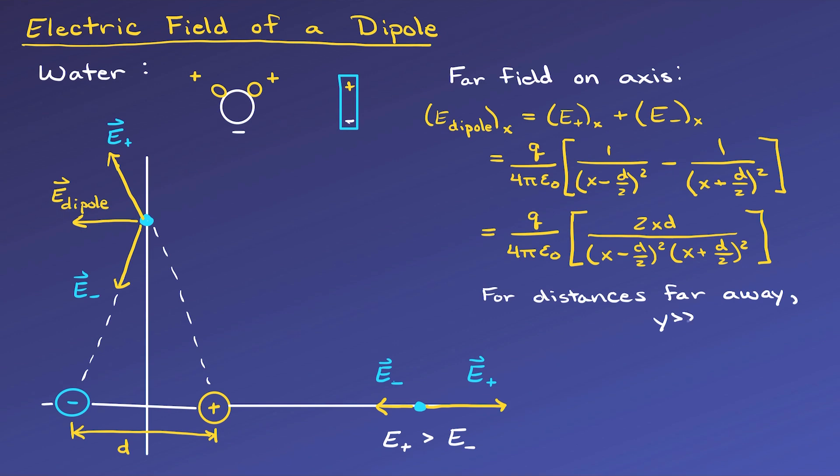Now we want to look at the field of a dipole when we are far away or far field along this axis. Mathematically, far away along the x-axis means where we want the field, or x, the point where we want the field, is much greater than the separation distance d of our dipole. Since d will be negligible relative to x, we can ignore the d over 2 terms in the denominator since x is so much bigger. This leaves us with the product of x squared and x squared, or x to the fourth.